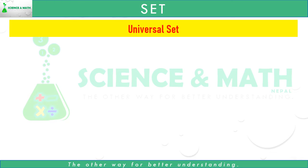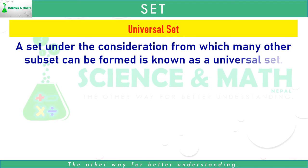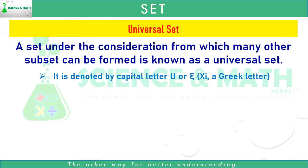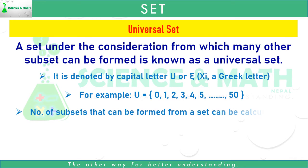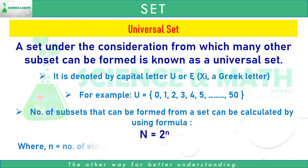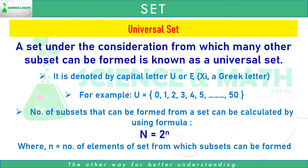Now let's see universal set. What is universal set? A set under consideration from which many subsets can be formed is known as a universal set. It is denoted by capital letter U or Psi (a Greek letter). For example, U equals the set of 0, 1, 2, 3, 4, 5, 6, 7, 8, 9, 10 up to 15. The number of subsets that can be formed from a set can be calculated using the formula N equals 2 to the power N, where N equals the number of elements of the set.